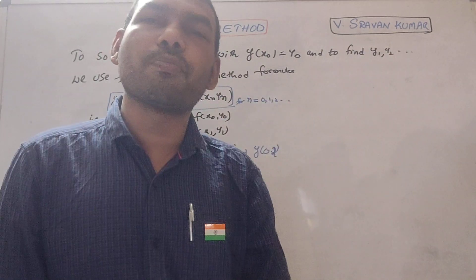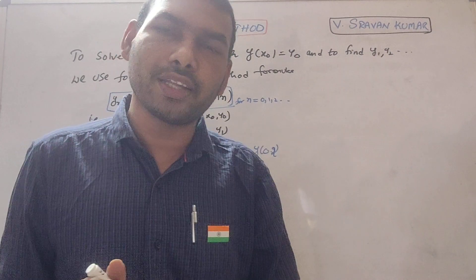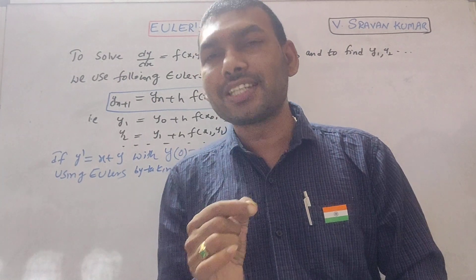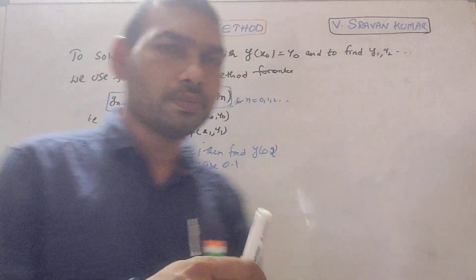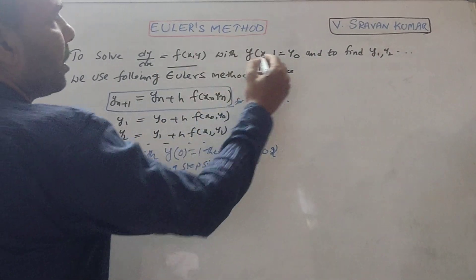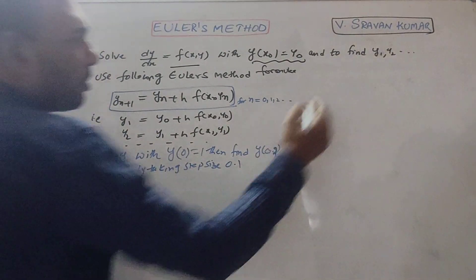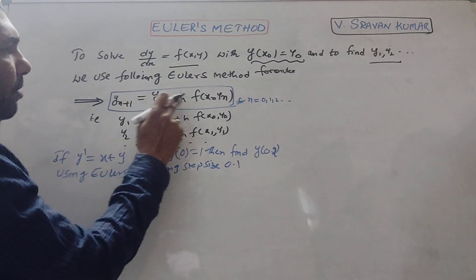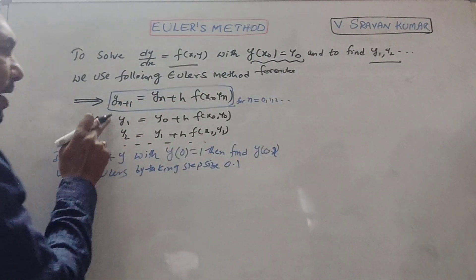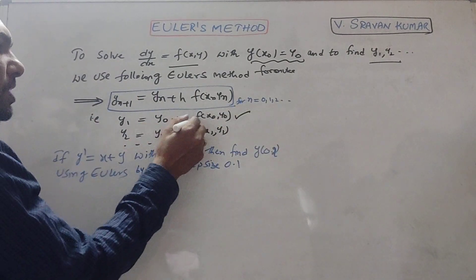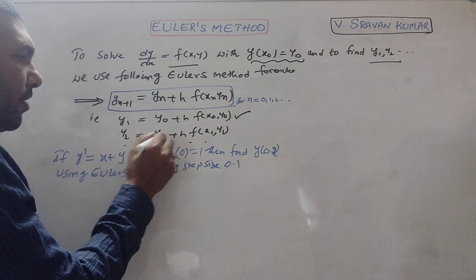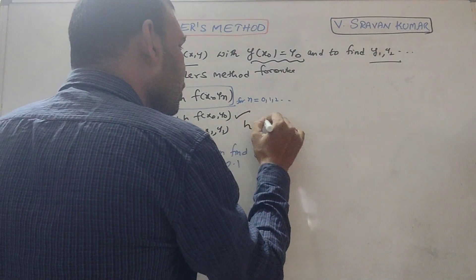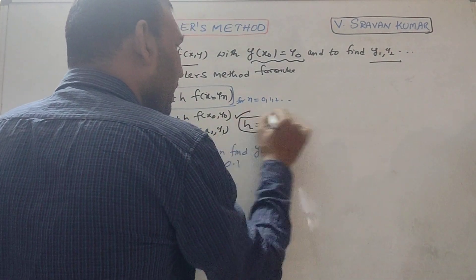Euler's method is useful to solve a first order first degree differential equation with an initial condition y(x₀) = y₀, given dy/dx = f(x, y). The formula is: y_{n+1} = y_n + h · f(x_n, y_n). For n=0: y₁ = y₀ + h · f(x₀, y₀); y₂ = y₁ + h · f(x₁, y₁); y₃ = y₂ + h · f(x₂, y₂). Here h is the step size, i.e., x₁ - x₀ = x₂ - x₁.